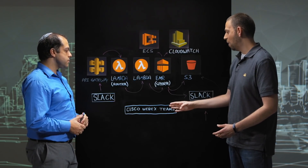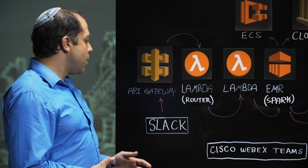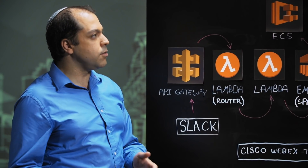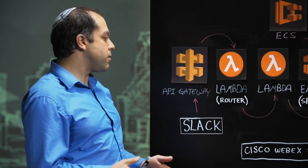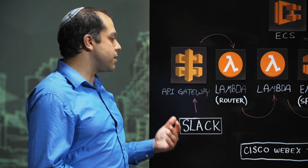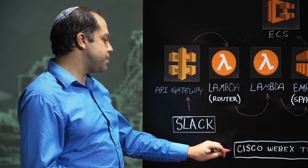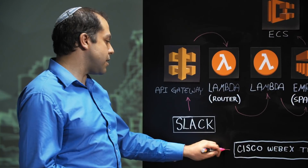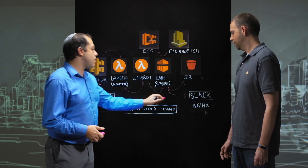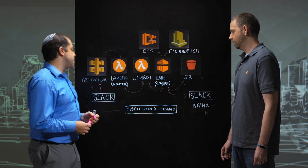I see you also have Cisco Webex Teams here — what is that? At the time we were using Slack as our internal communication tool, but now that we're part of Cisco, we're migrating to new tools, and one of those is Cisco Webex Teams. It works the same way as Slack — Cisco Webex Teams sends a request to the API Gateway and EMR posts the URL back to Cisco Webex Teams.